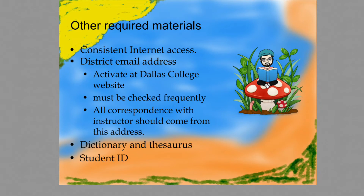Because this is an online course with more than one assignment usually due each day, it's important that you have a good working computer and consistent internet access. You should use a district email address, which you can activate at the Dallas College website. It needs to be checked frequently as I try to communicate with the class and with students individually. All correspondence with the instructor should come from that address. It's also helpful to use a strong dictionary and thesaurus, and a student ID should you need to check out materials from any of the Dallas College libraries.